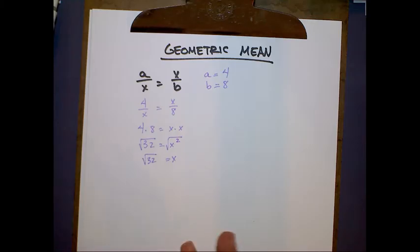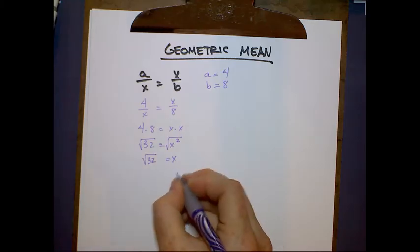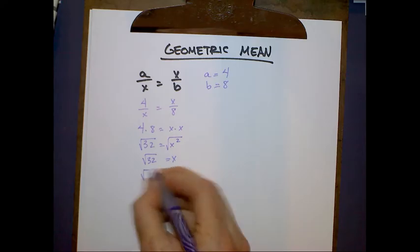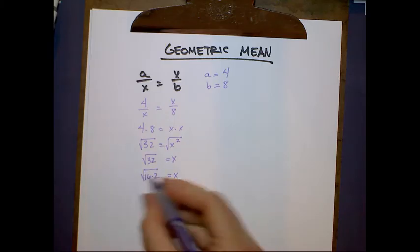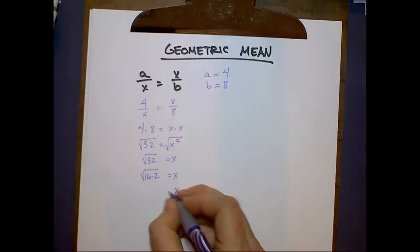We get x equals the square root of 32. Now, can we simplify this radical? The answer is yes, and that is because 32 has a factor that is a perfect square. 16 is the square of 4.